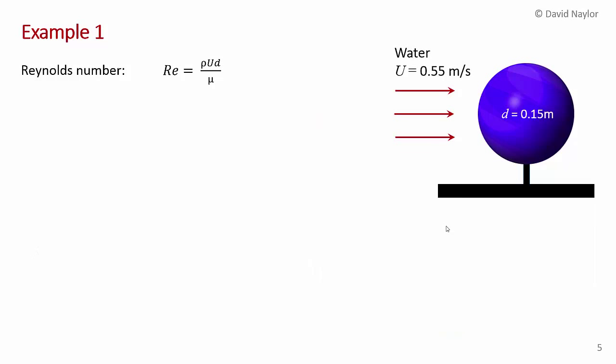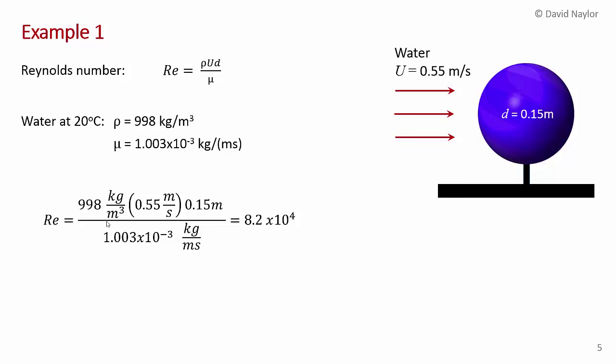We calculate the Reynolds number based on the outer diameter of the sphere. The Reynolds number is rho times the free stream velocity times the diameter divided by the dynamic viscosity. For water at 20 degrees C, the density is 998 kilograms per cubic meter and the dynamic viscosity is about 1×10⁻³ kilogram per meter per second. With a velocity of 0.55 m/s and diameter of 0.15 meters, we get a Reynolds number of 8.2×10⁴.